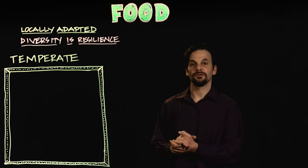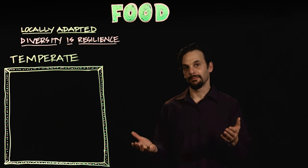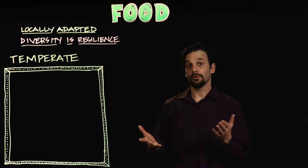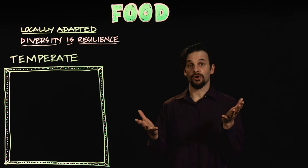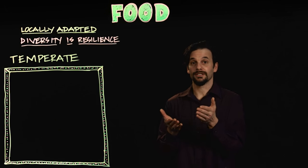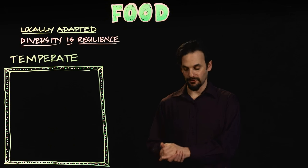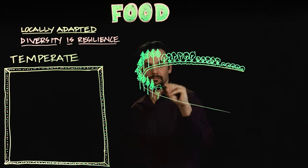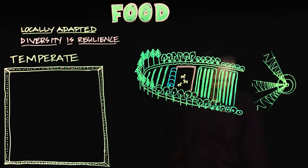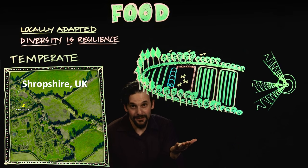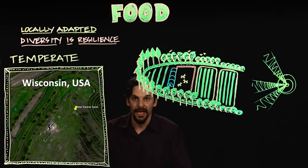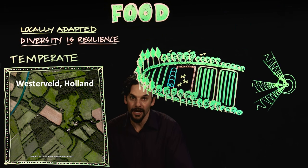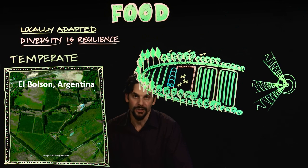Because temperate climates are farther from the equator, sunlight can be a limiting factor. Proper orientation toward the sun and creating sun traps will create microclimates that are lighter, warmer, and more protected from the wind. The idealized farming landscapes in temperate zones are mosaics of field, forest, hedgerow, and orchard — rotating fields between grazing, food crops, and cover crops, collecting water in ponds, and managing productive forests.